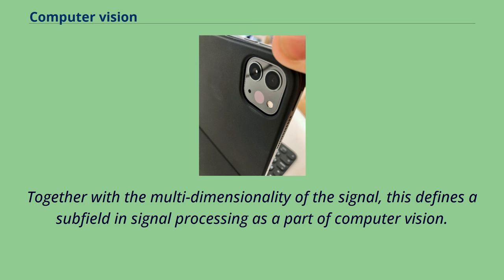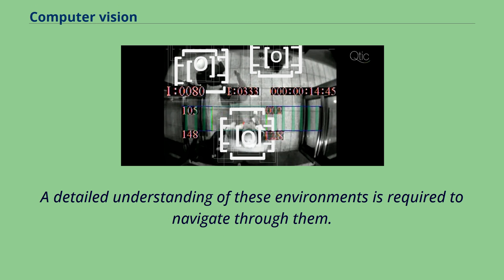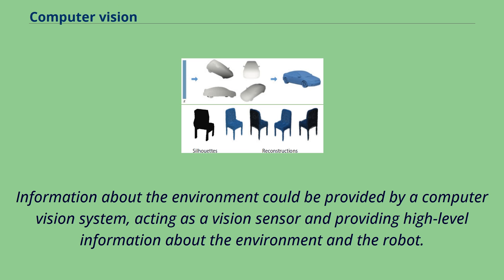Robot navigation sometimes deals with autonomous path planning or deliberation for robotic systems to navigate through an environment. A detailed understanding of these environments is required to navigate through them. Information about the environment could be provided by a computer vision system, acting as a vision sensor and providing high-level information about the environment and the robot.